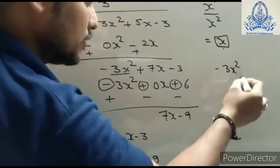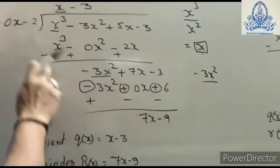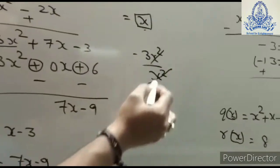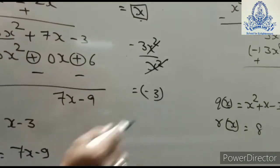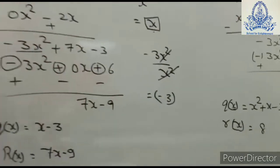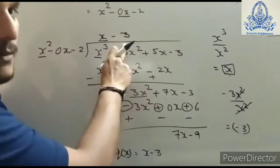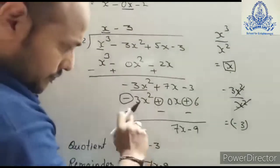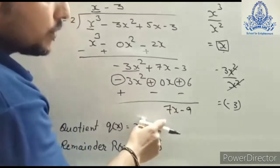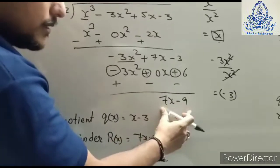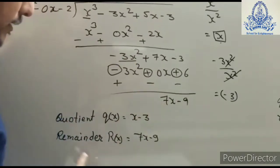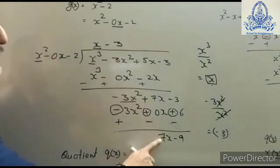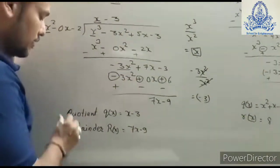We bring down the remaining terms and repeat the process. The first term of the new dividend is divided by the first term of the divisor: x² ÷ x² cancels, leaving −3, which is the second term of the quotient. After the final subtraction, whatever remains is the remainder. So we write the quotient and the remainder.